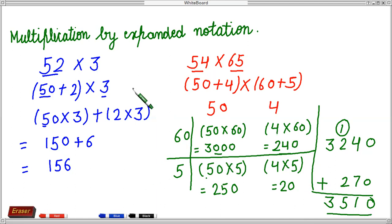So this was the multiplication by expanded notation. When we have one two digit number, then we have to break that number only. But when we have both the numbers are of two digit numbers, then we have to break both the numbers like this. It will be a step by step process. Thank you everyone for watching the video.